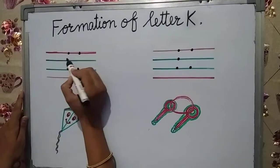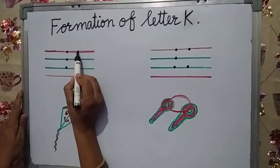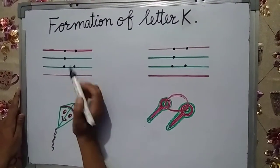Now, let's start. For letter K, put one dot here, one dot here, one dot here and one dot here.